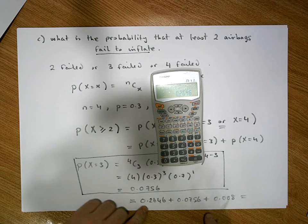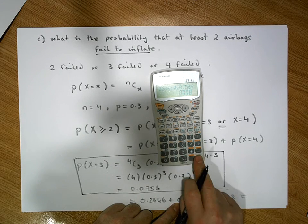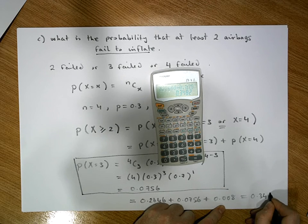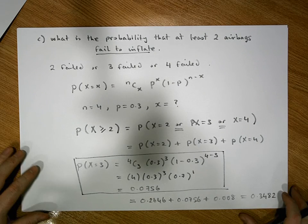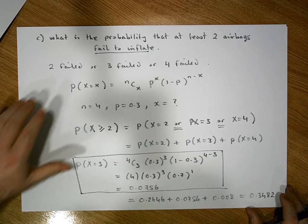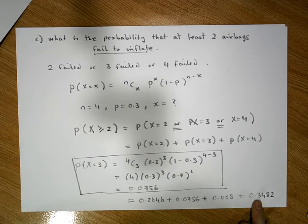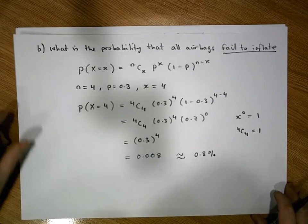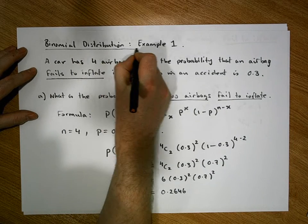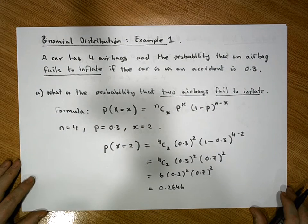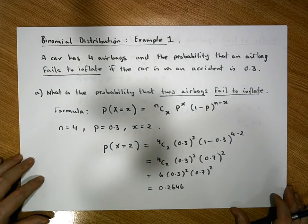So if you're in a car crash and there are four airbags in the car, the probability that two, three, or all four airbags fail to inflate is about 34–35%. This was Jonathan Lambert with the Mathematics Development and Support Service at the National College of Ireland, with an example of the application of the binomial distribution. Thank you for your time.